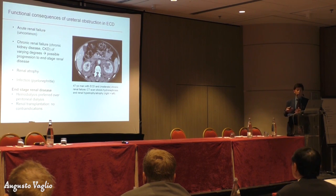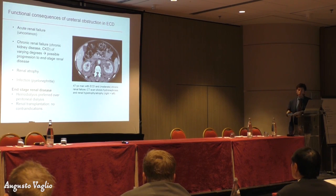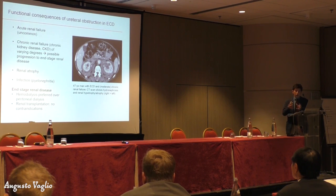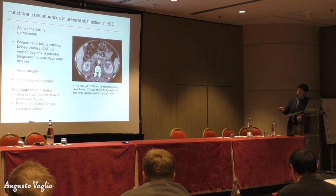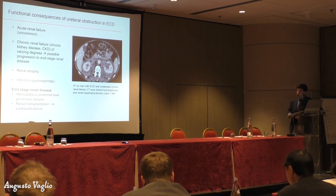End-stage renal disease means kidney function is totally affected and you need replacement therapy, which is dialysis or transplantation. In some cases, obstruction also causes renal atrophy, because when an organ is affected it becomes smaller — it shrinks. In this patient, for instance, we see that one kidney is smaller than the other and shows some degree of atrophy.